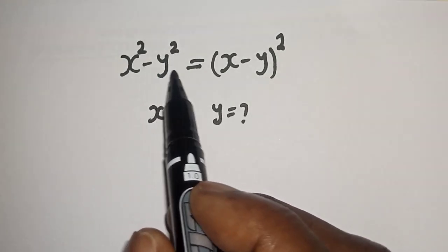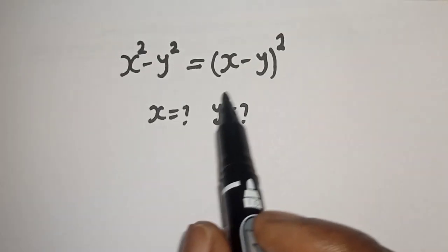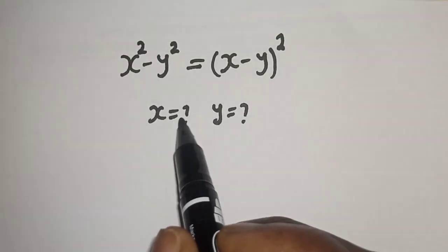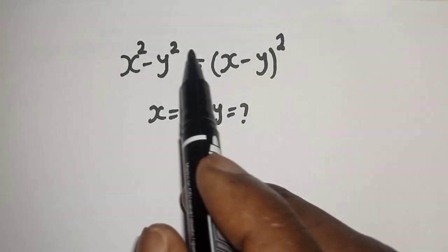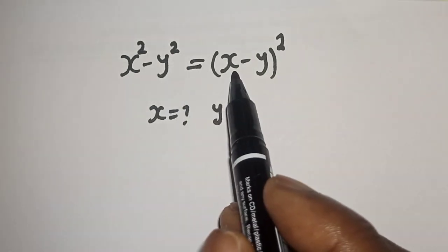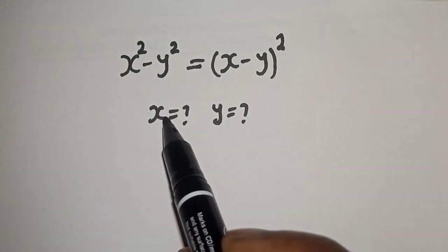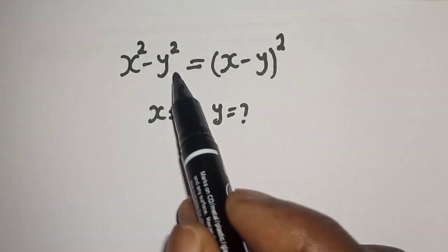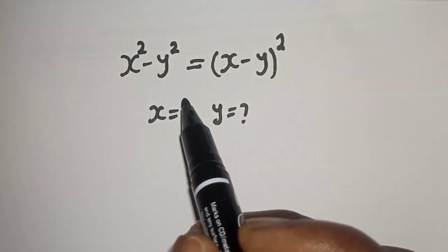x squared minus y squared is equal to x minus y, all squared. What is the value of x and what is the value of y? Hi everyone, welcome to my class. In this class, we want to find the value of x and y from this given equation.